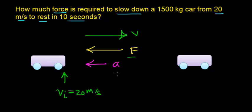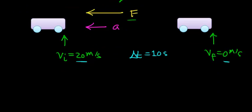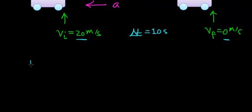This force is going to be slowing down this car until it reaches a final velocity of 0 meters per second — that is, this car is going to come to a rest. The time it takes for this car to go from 20 meters per second to 0 meters per second is going to be 10 seconds. In order to figure out the force required to stop this car, we're going to need to apply Newton's second law of motion, which says that the sum of forces acting on an object equals the mass times the acceleration. So we're going to need to know the mass and the acceleration of the car.